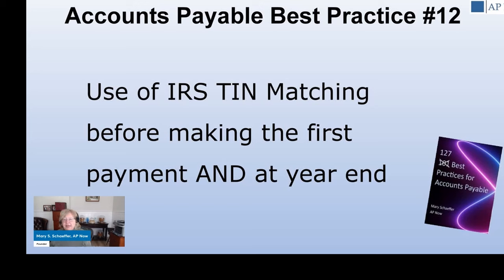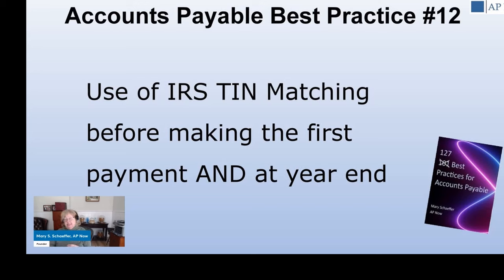Accounts payable best practice number twelve: as soon as you get that W-9, use IRS TIN matching to verify it's accurate. Do this at two points: when you first receive the W-9, and again at year end. The reason you repeat it at year end is that sometimes suppliers have a change in circumstance they forget to tell you about, and then you issue 1099s using the old W-9 information and end up with a B notice. It's much easier to run all that information through IRS TIN matching before you issue your 1099s, catch errors yourself, and fix them without going through the rigorous steps the IRS requires.